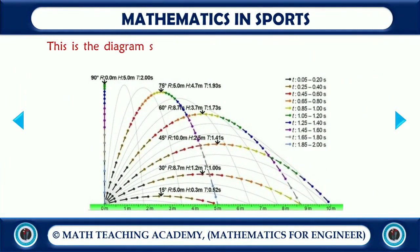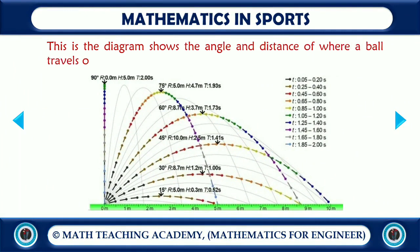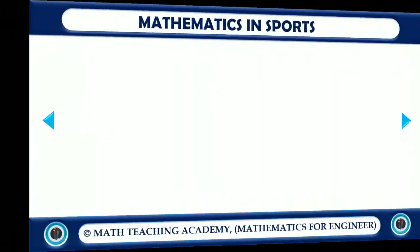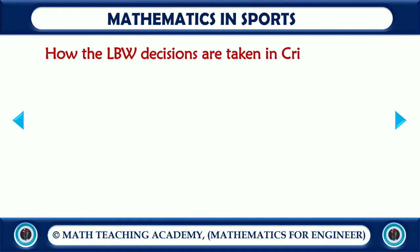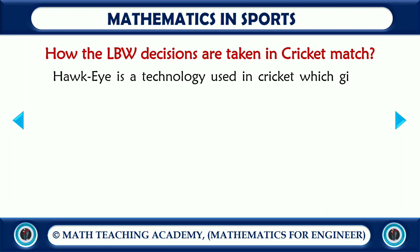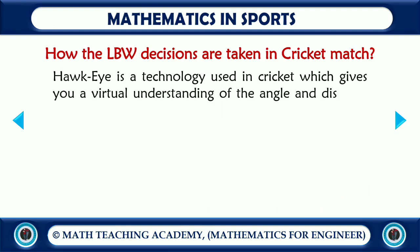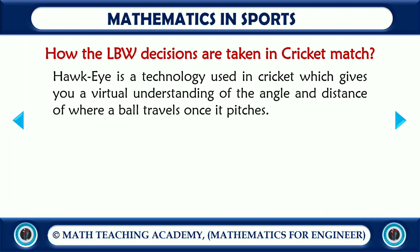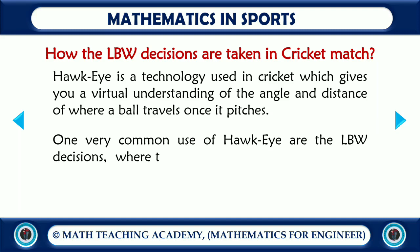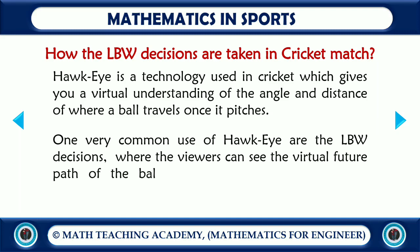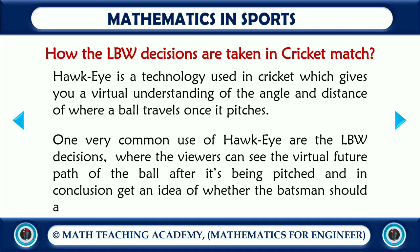Hawk-Eye is a technology used in cricket which gives you a virtual understanding of the angle and the distance of where a ball travels once it pitches. One very common use of Hawk-Eye is for the LBW decision, where viewers can see the virtual future path of the ball after it has pitched, and in conclusion get an idea of whether the batsman should actually have been adjudged LBW or not.